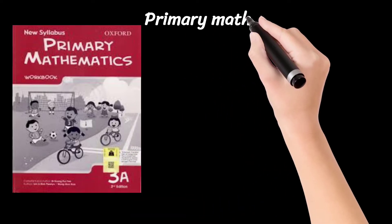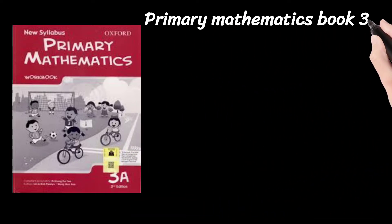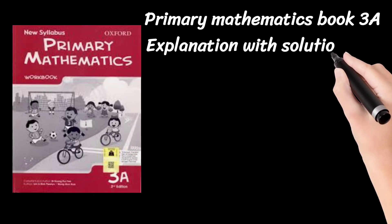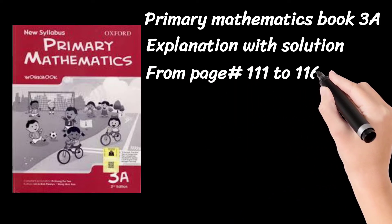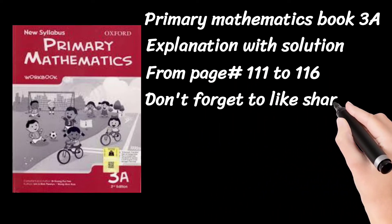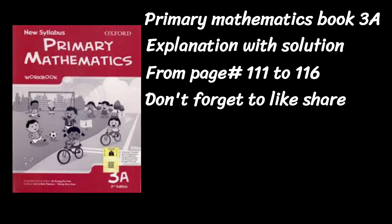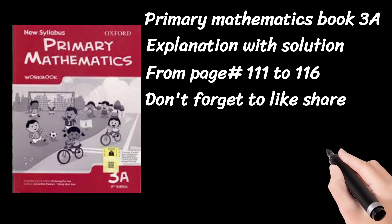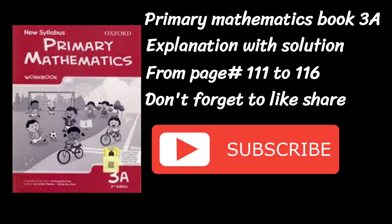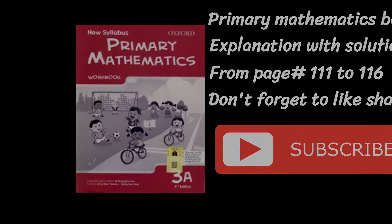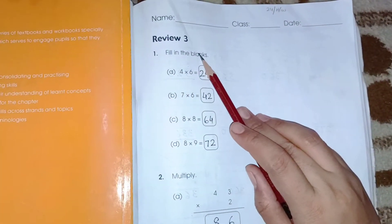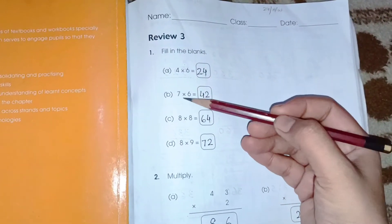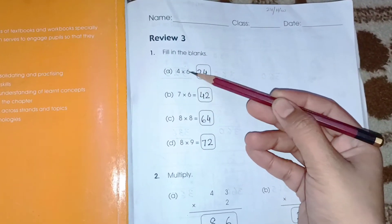Hi everyone, today we are going to solve Primary Mathematics Book 3A, Chapter 3, from page number 111 to 116. Page number 111, Review 3 — name, class, and date. First we have to write the table: 4 × 6 is 24.